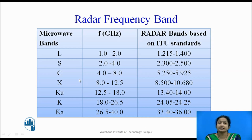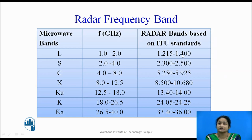These frequencies are again divided into different bands which are basically used for radar applications: L, S, C, X, Q, K, and Ka bands. These are the standard bands specifying exactly which frequencies each band covers, with the frequency range specified in gigahertz.